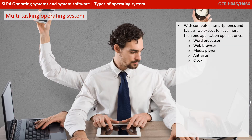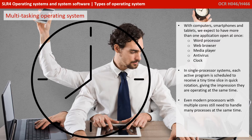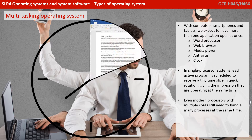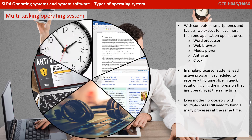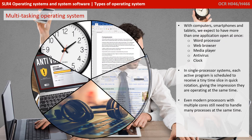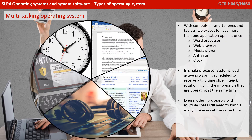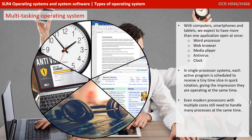Multi-tasking operating systems: with computers, smartphones and tablets, we expect to have more than one application open at the same time. In a single processor system, each active program is scheduled to receive a tiny time slice in quick rotation, giving the impression they're operating at the same time. Even modern processors with multiple cores will still need to handle many processes at once.